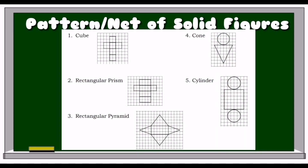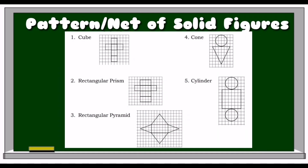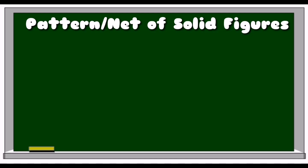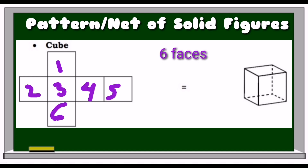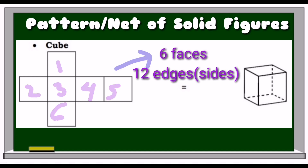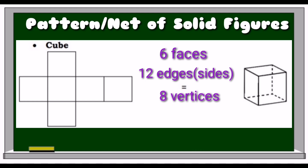Every solid figure has a pattern. The following images that are drawn are indeed plane figures, called nets. The first net drawn is for a cube. A cube has 6 faces, 12 edges or sides, and 8 vertices.